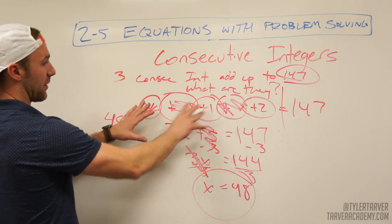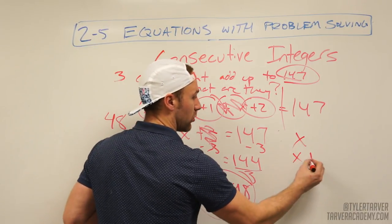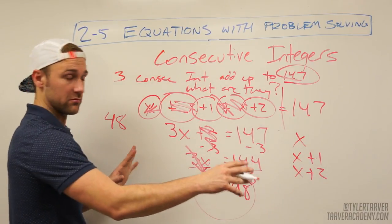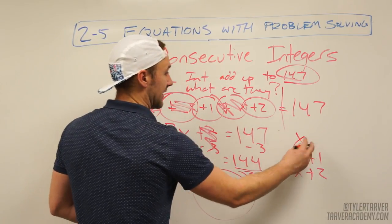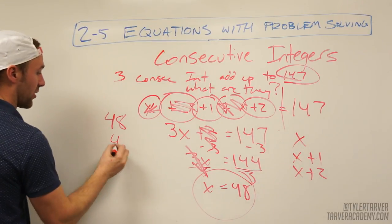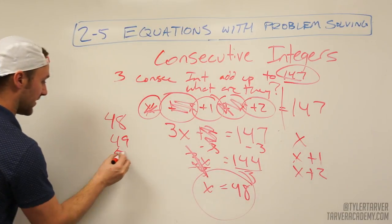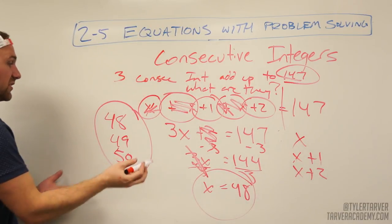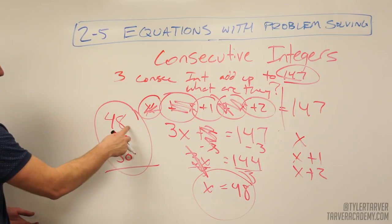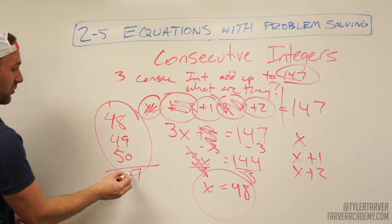I had x, x plus 1, and x plus 2. I found x equals 48. So x plus 1 is 49, and x plus 2 is 50. You can verify: 48 plus 49 plus 50 equals 147. Correct!